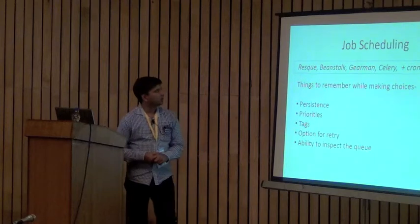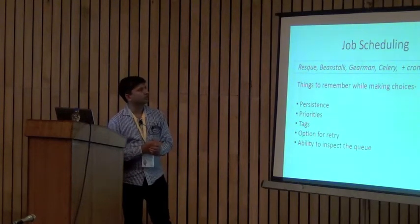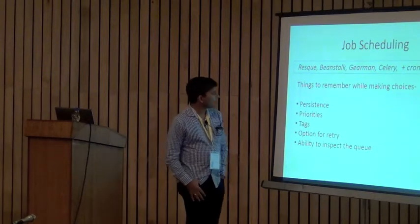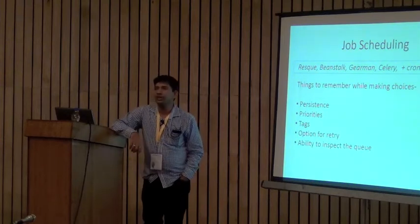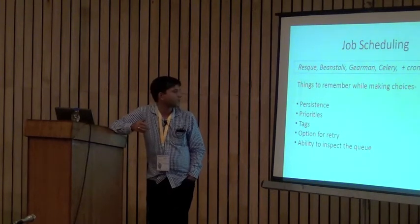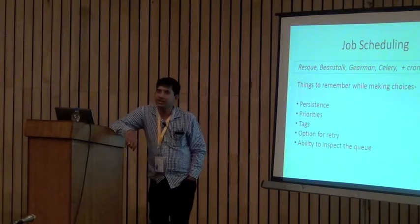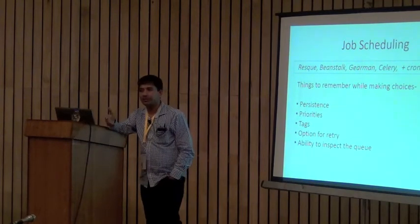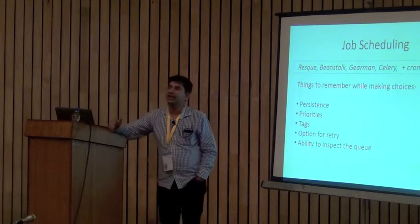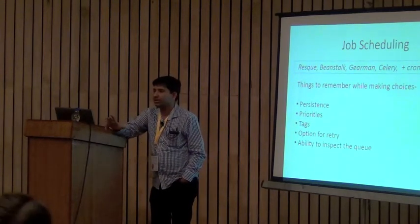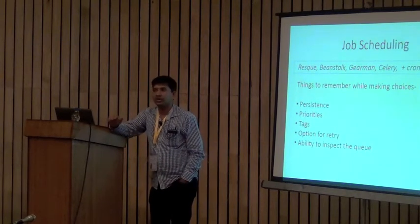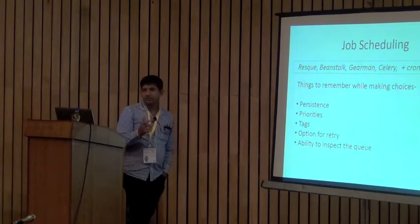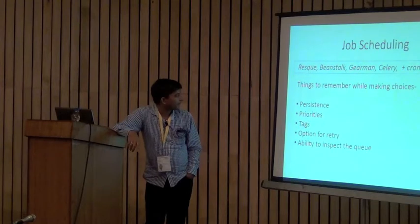Once you have multiple processes running it is no longer feasible to manually schedule them, because machine usage varies. If you have multiple servers and you graph their usage, it is hardly ever more than 50 percent on average. That is where a job scheduler comes in - it allows you to utilize them in a better way. Choices include Resque, Sidekiq, or in the simplest form people use cron or some queues. Things to consider when picking a job scheduler: does it handle priorities, does it handle tags, does it have an option for retry, and can you inspect the queues.